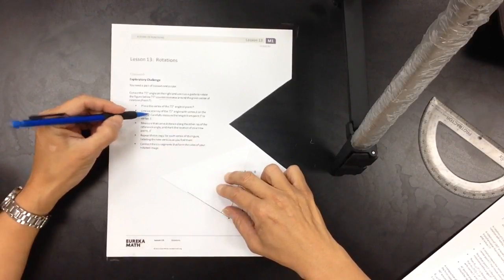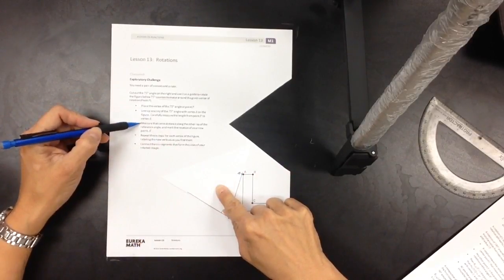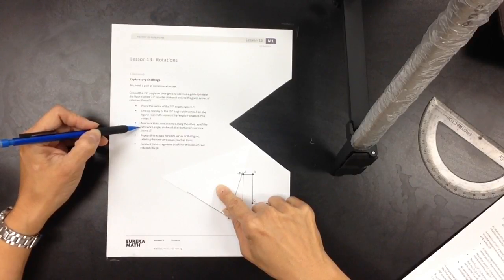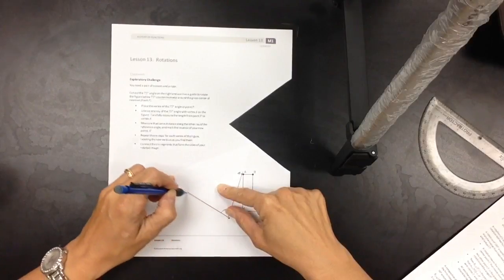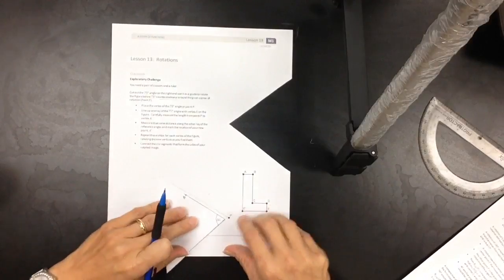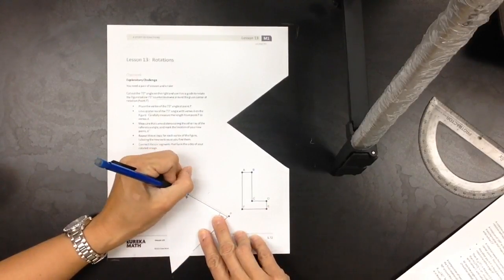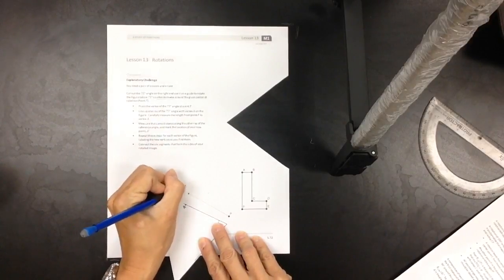Carefully measure the length from point P to vertex A. I carefully did it. Measure that same distance along the other ray of the reference angle and mark the location of your new point A. So I'm just going to draw a line along this ray and use my measurement. I could get a ruler, but this is going to be just as accurate. There is, and we're going to say A prime.